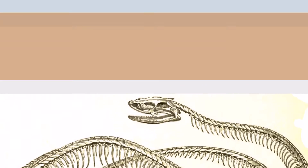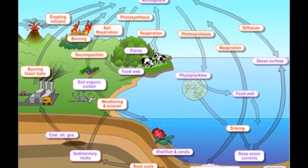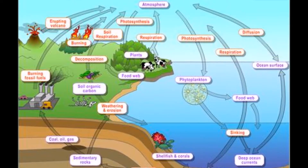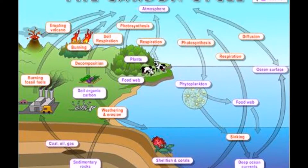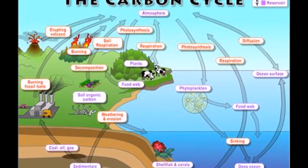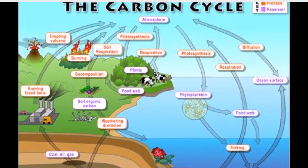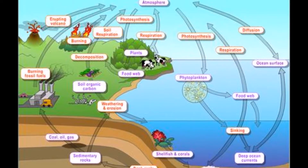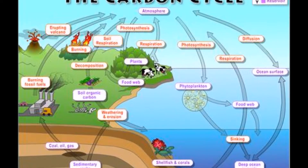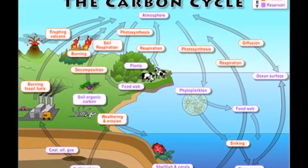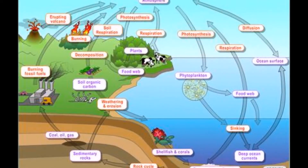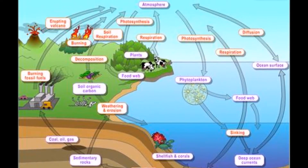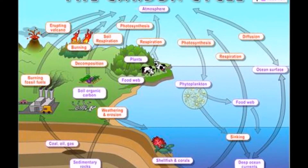In some circumstances, the process of decomposition is prevented. The decomposed plants and animals may then be available as fossil fuel in the future through combustion. Then we return to the first step.